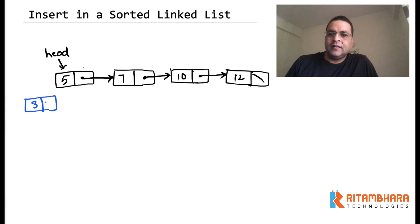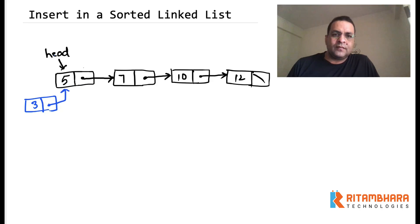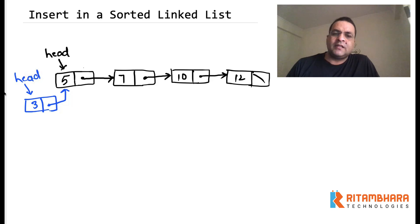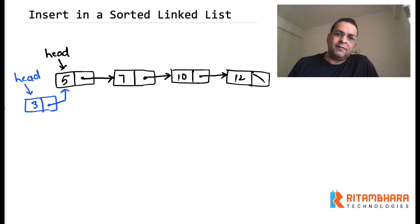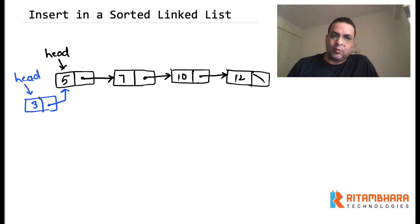So if we are inserting three then three will become the first node. If three becomes the first node then next of three will be five. It also means that the head pointer will change. So when we are writing the signature of the function, if we are using a language like C where we are accepting the head pointer, then we should be returning the head pointer because the head pointer is changing. If the head pointer is part of the class itself then we should consciously change the head pointer. So this function has a potential of changing the head pointer — I am just calling it out so that we are conscious about it.